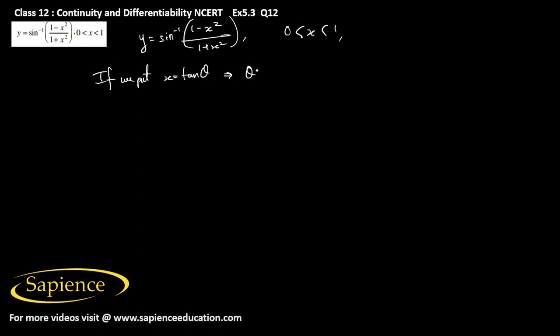From here we can say that tan inverse x will be greater than tan inverse 0, which is 0, and less than tan inverse 1, which is pi by 4. So theta lies between 0 and pi by 4.